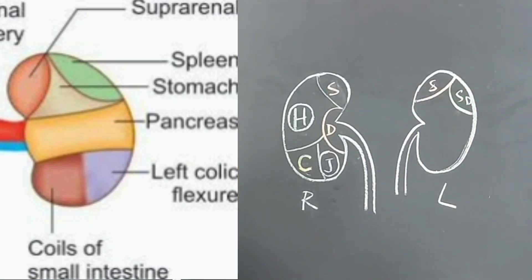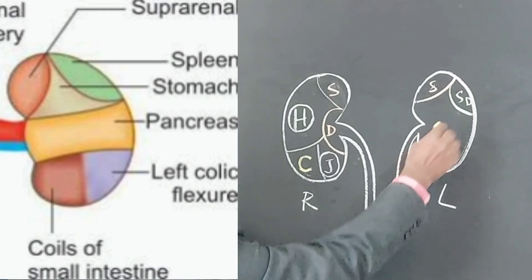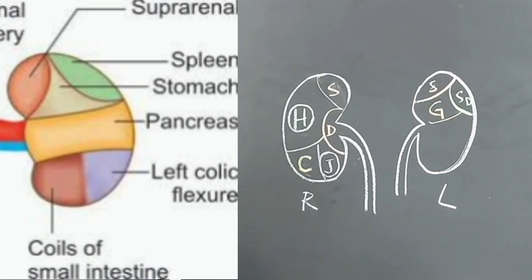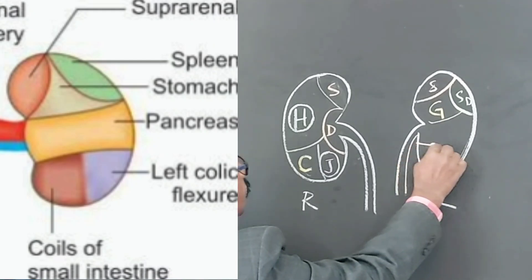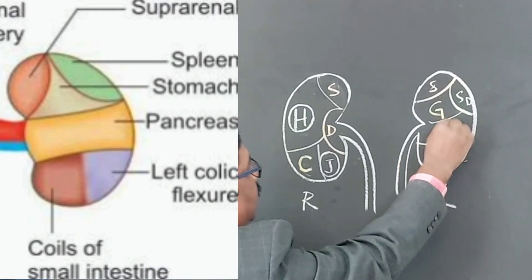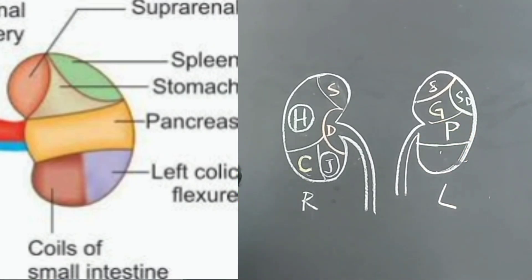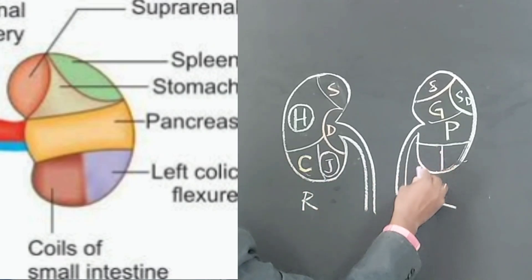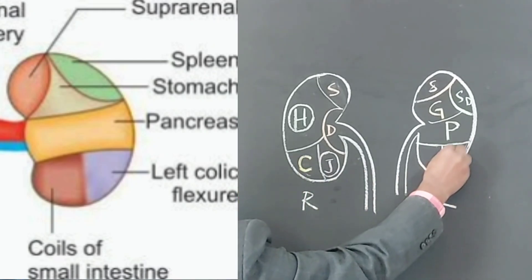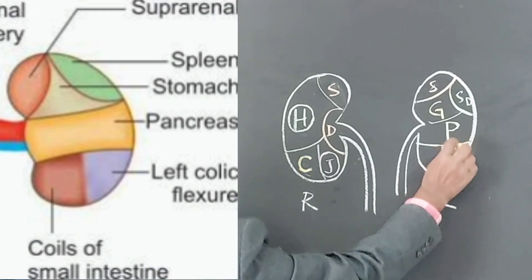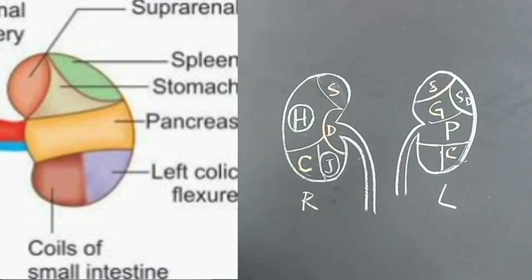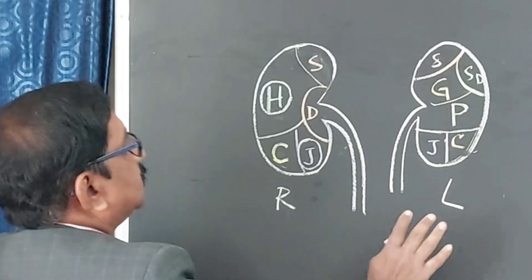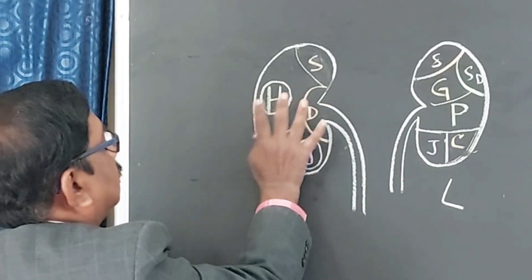Medially, here you will get the gastric impression, or stomach. In the next part, you will get another viscera — that is the pancreas, giving a pancreatic impression. And below that, this area again, like that of the right side, is the left colic flexure — the colic impression — and medially there is the jejunal impression. On the left side there are six viscera, and on the right side there are five viscera.